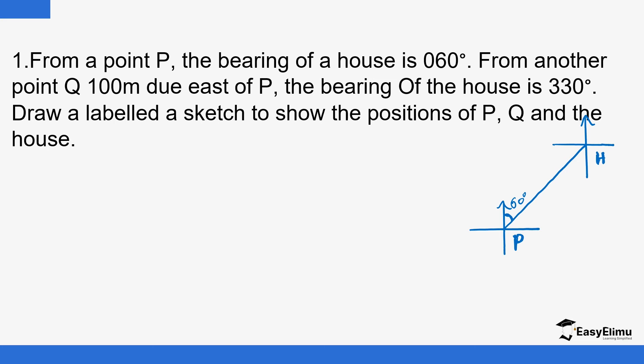From a point P, the bearing of a house is 060 degrees. Then from another point Q which is 100 meters due east of P. So east is this side, so you extend towards east. So this is where Q is. The bearing of the house is 330 degrees. So if you join Q to H, this angle here is 330 degrees.